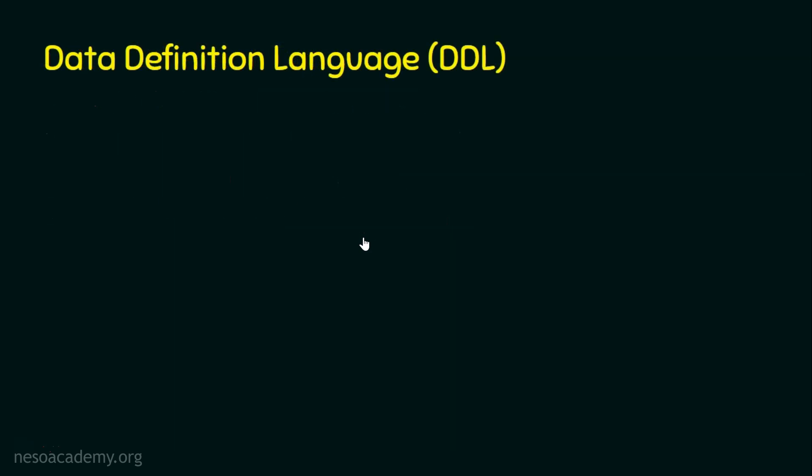So what is DDL? DDL is a sub-language of SQL, and whatever commands we use in DDL are going to directly affect the structure of the table. A table is basically comprised of rows and columns. Rows represent the data portion, while columns represent the structure. Whenever we make any changes with respect to the columns or the entire structure of the table, those commands are called DDL commands.